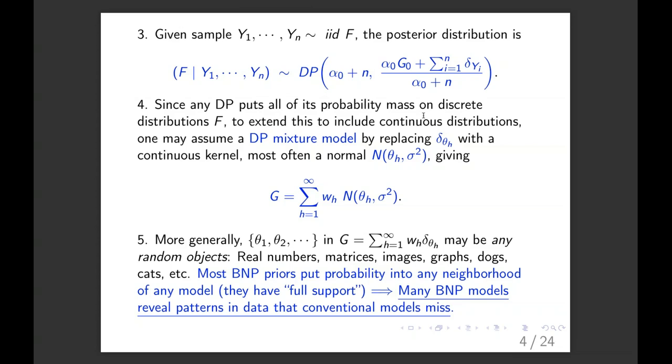And then the Dirichlet process has this property that it puts all of its probability mass on discrete distributions. And so if you want continuous distributions, you say, well, let's replace this Dirac delta function with a normal distribution. So you say, I want a normal distribution that's got its mean at some value theta H and we'll give them all the same variance. And so this is the key idea here is that a Dirichlet process really is a mixture of normals.